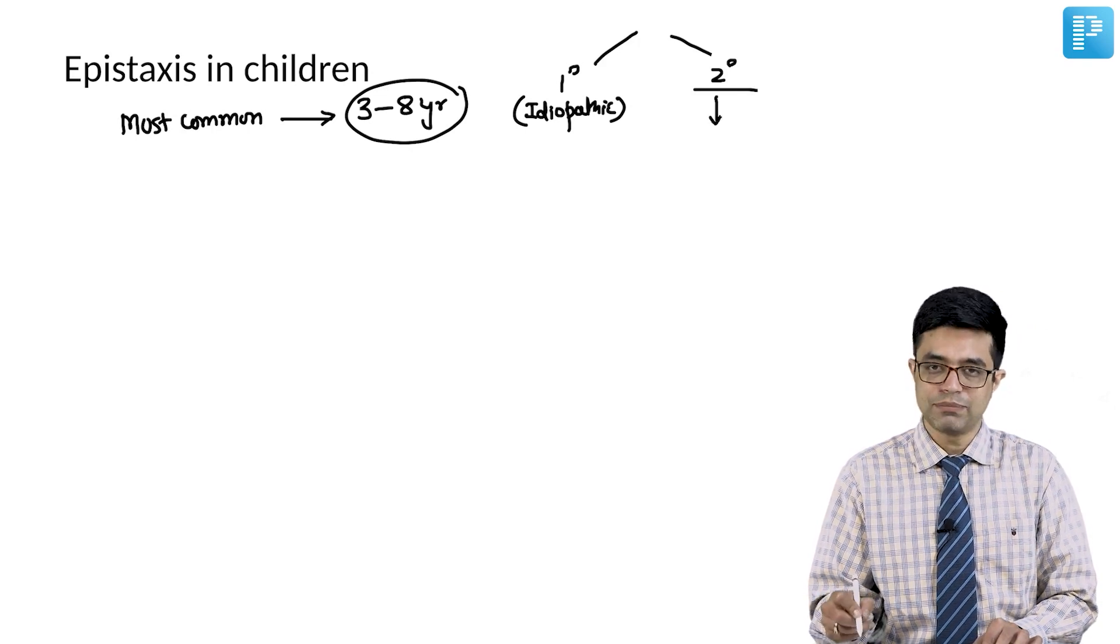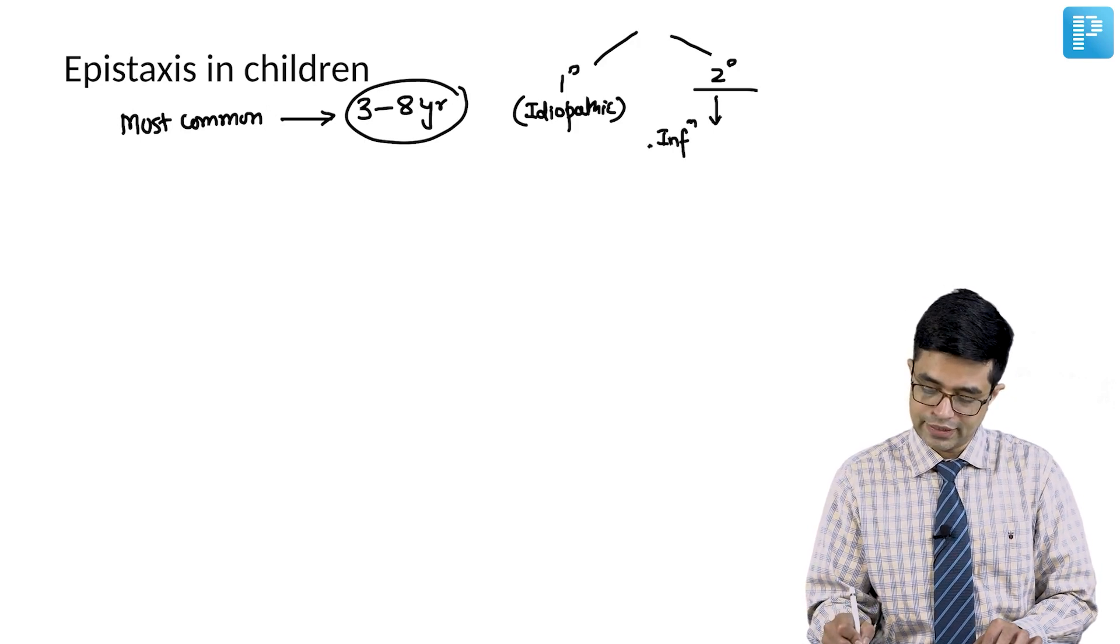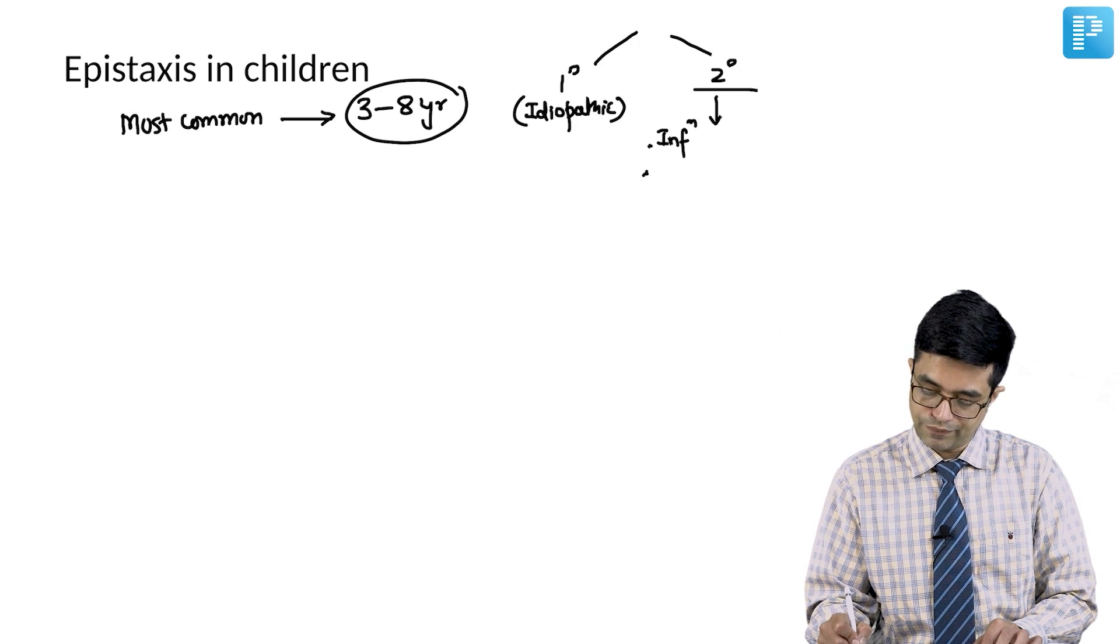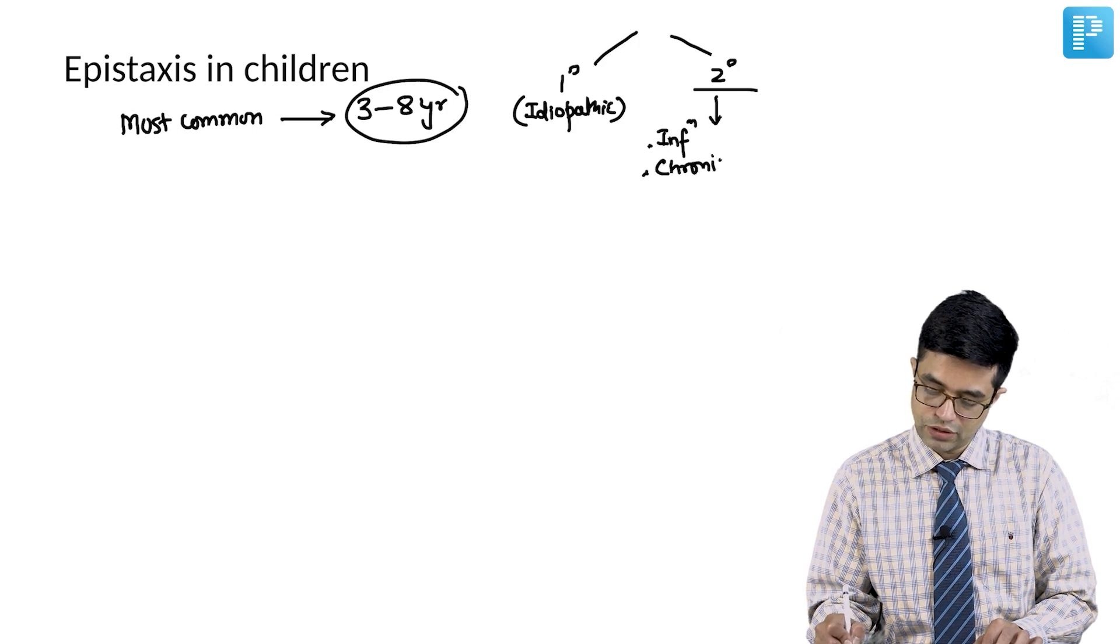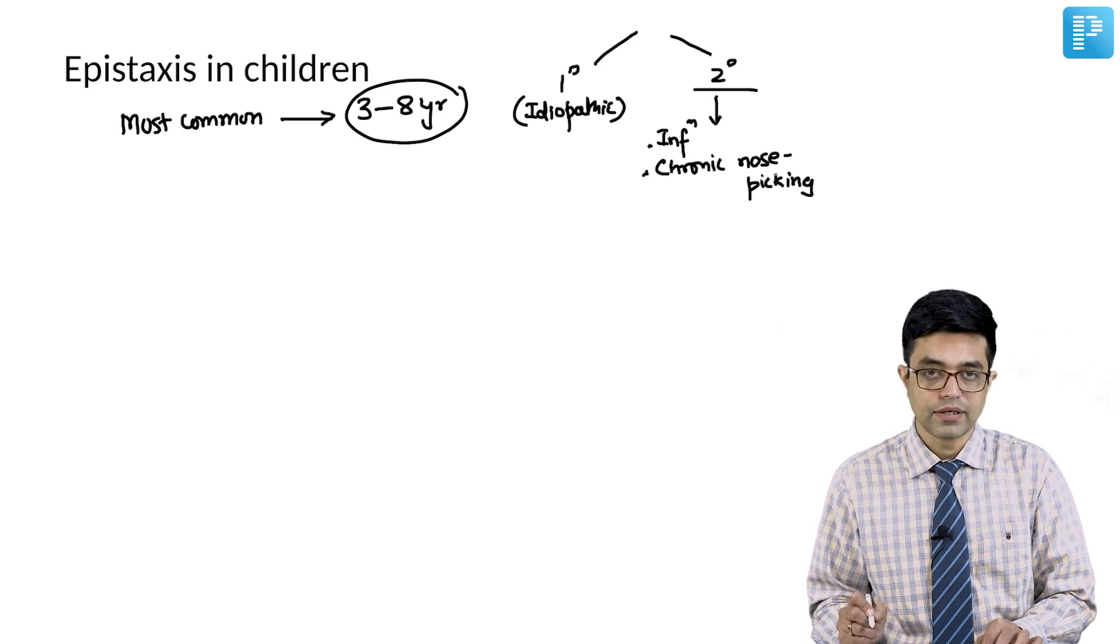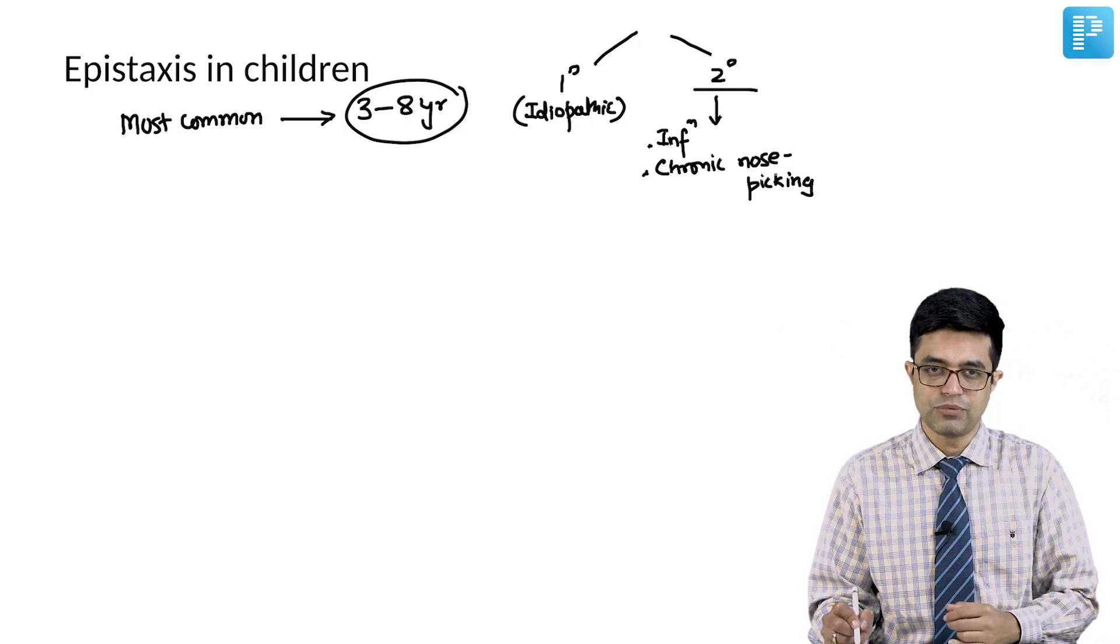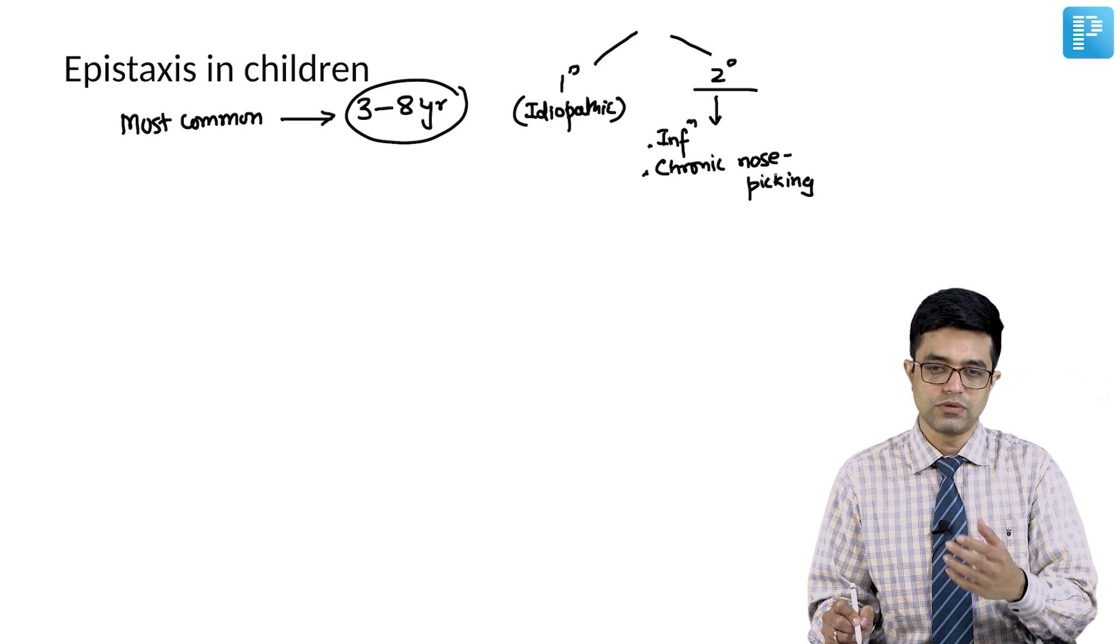The secondary causes can have multiple reasons. It can occur due to infections like viral nasopharyngitis. It can occur due to chronic nose picking by the child. If the child has a habit of frequently putting fingers into the nose, nose picking can cause epistaxis.